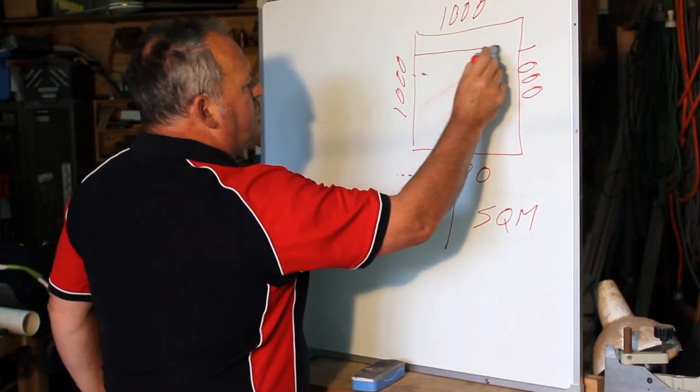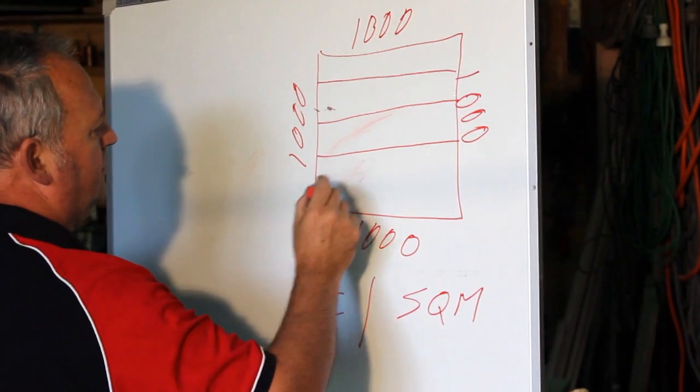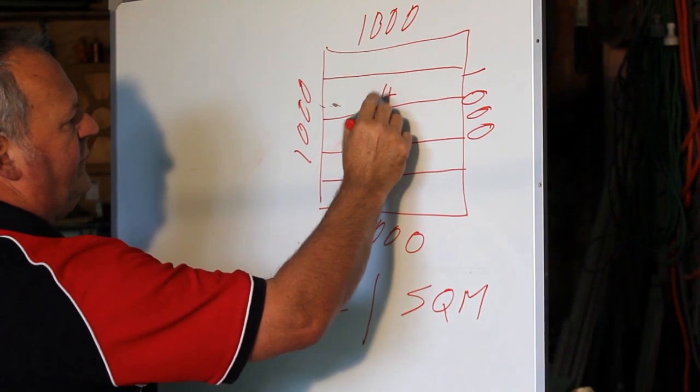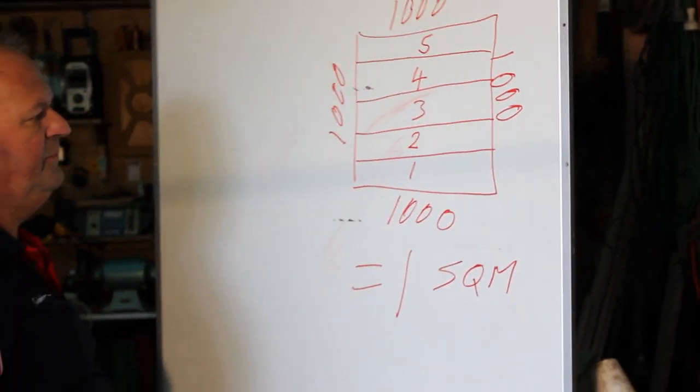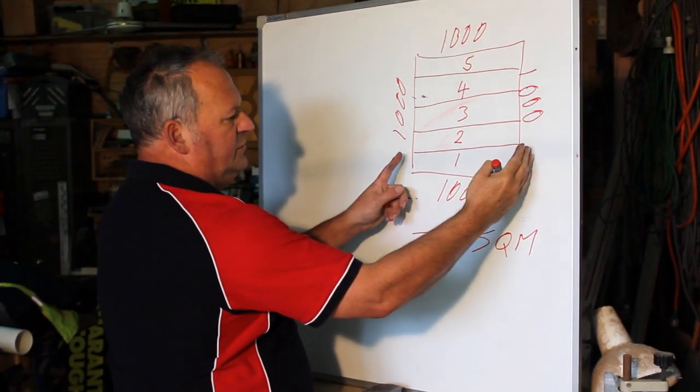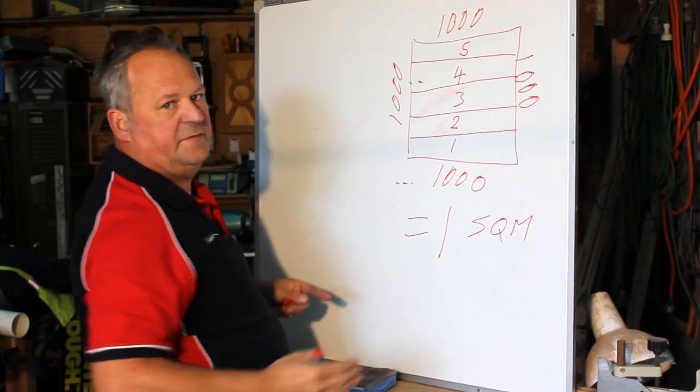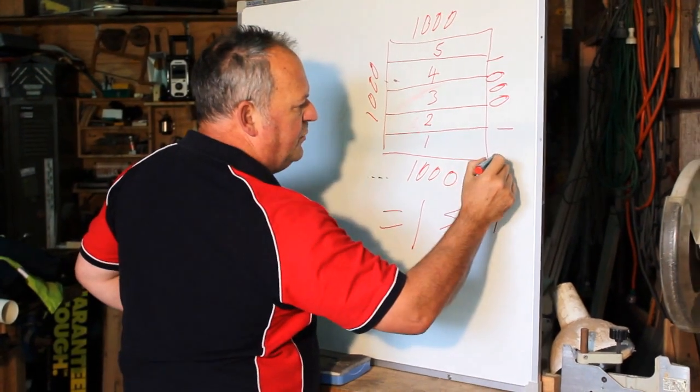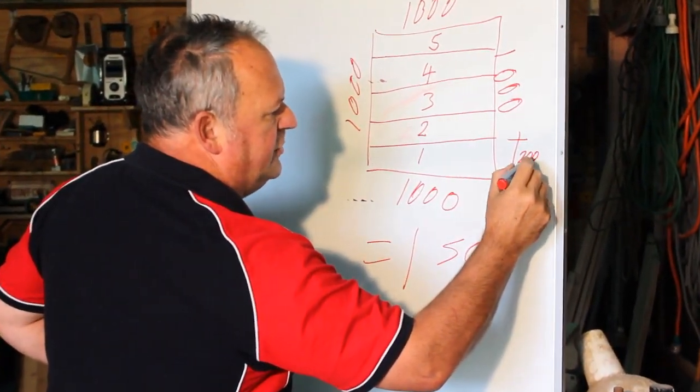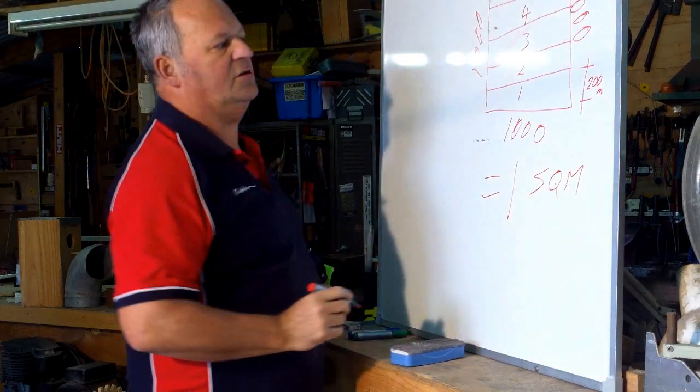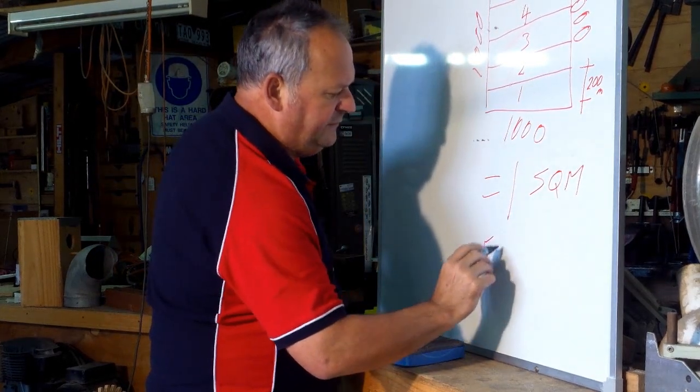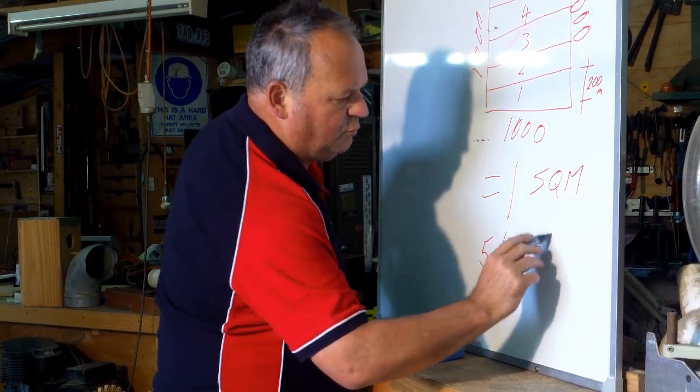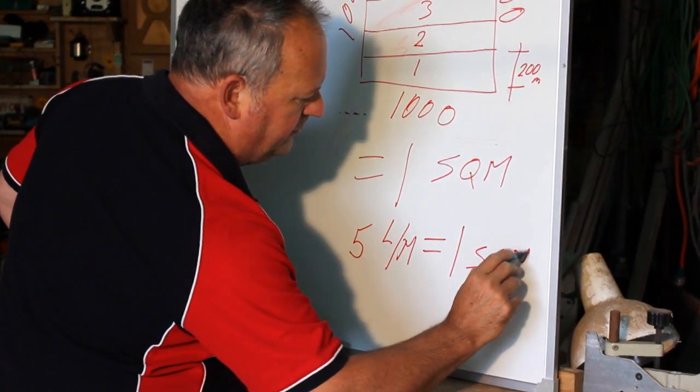If I put boards on that and we count them up, one, two, three, four, five. So the boards are a metre long and there's five of them cover the one square metre, which means that each board is about 200 millimetres across.